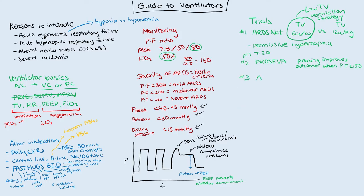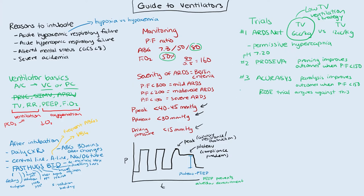The third trial is the ACURASYS trial, which showed paralysis improves outcomes when P to F is less than 150. Paralyzing agents such as vecuronium, rocuronium, and cisatracurium allow the diaphragm to completely relax so the ventilator does all the work. However, the more recent ROSE trial did not find a similar mortality benefit. Remember: whenever you paralyze someone, ensure adequate sedation. Proning is typically done for 18 hours prone, then 6 hours supine, adjusted based on patient response, and stopped once P to F exceeds 150.